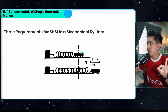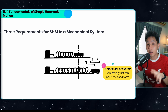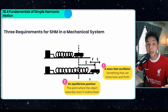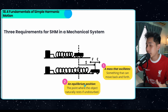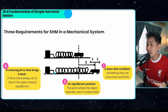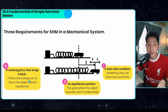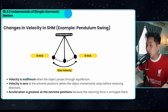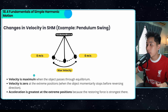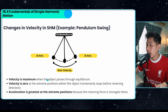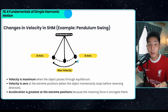Three requirements for SHM in a mechanical system: first, you need a mass that can oscillate and move back; there must be an equilibrium position, which is the point where the object naturally rests if undisturbed; and lastly, you need a restoring force that always acts to return the object towards equilibrium. In SHM, velocity is maximum when the object passes through equilibrium, velocity is zero at the extreme position, and acceleration is greatest at the extreme position because the restoring force is strongest there.